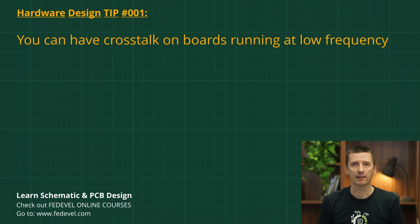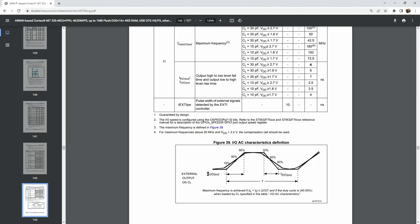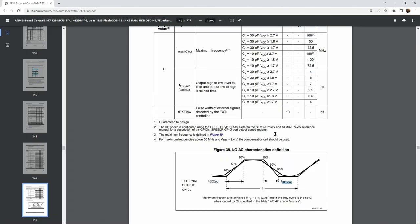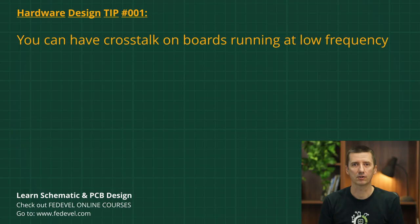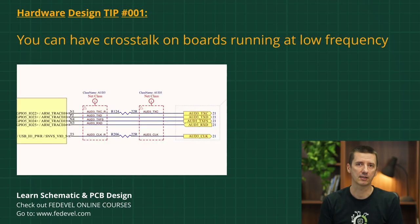Sometimes signal edge properties can be set in the microcontroller or processor registers. If that's not possible, you may want to add series termination resistors.